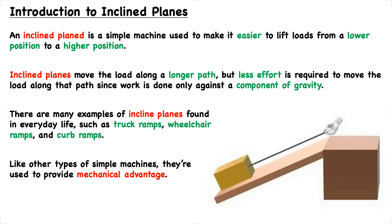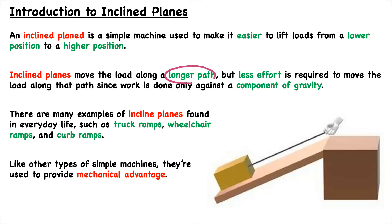In this video, we're going to talk about another type of simple machine. This time, that simple machine will be the inclined plane. This simple machine is used to make it easier to lift loads from a lower position to a higher position. This is in contrast with just lifting a load directly upwards. Inclined planes move the load along a longer path, but less effort is required to move the load along that path since work is done only against a component of gravity.